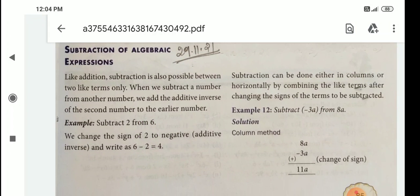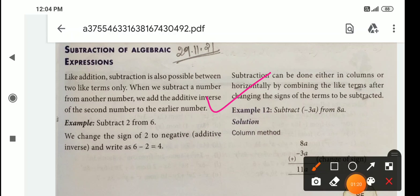Subtraction can be done either in columns or horizontally by combining the like terms after changing the signs of the terms to be subtracted. Let's see Example 12. Here, subtract minus 3a from 8a. So first we write 8a, then minus 3a. Then the additive inverse of minus 3a is children plus 3a.